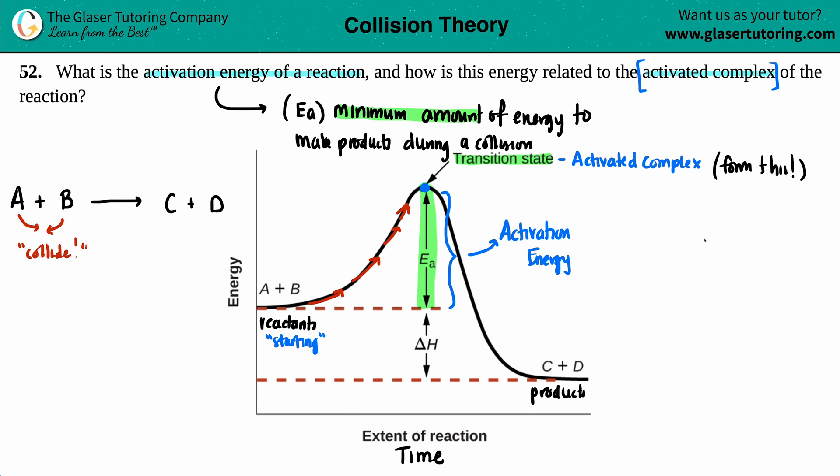A transition state or an activated complex is the most unstable component of a reaction. The activated complex or the transition state is literally the in-between mode between A and B and C and D. So the actual turning over of A and B into C and D is your transition state.